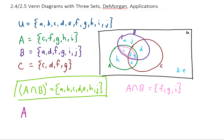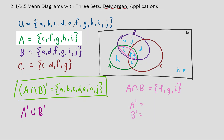Next, let's find A complement unioned with B complement. To find that union, we might want to find A complement and B complement first. To find A complement, we can look at set A — the complement is everything that's not in this set, so that would be A, B, D, E, and J.